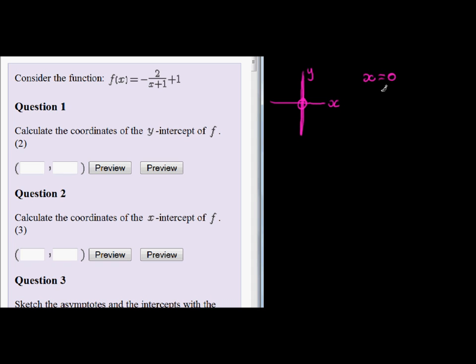Make x equal to 0, and then we get that f(0) is equal to -2 over 0 plus 1, plus 1.